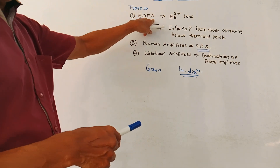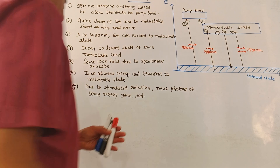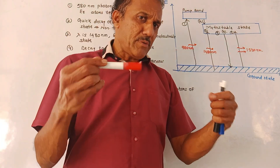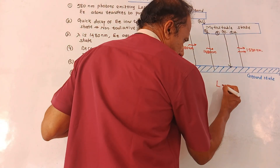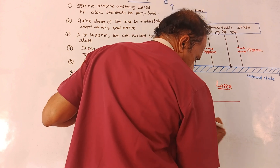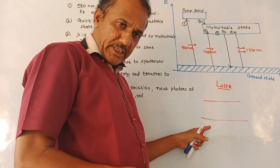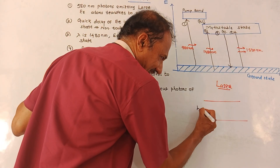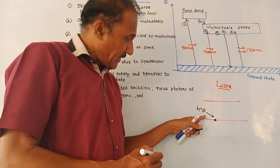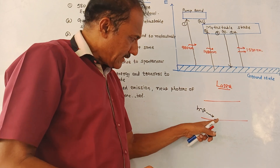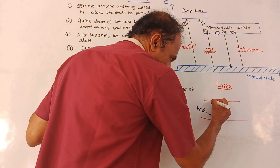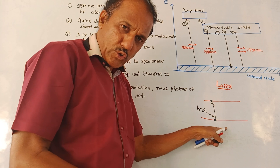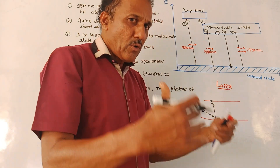Now let us discuss EDFA, the erbium doped fiber amplifier, in detail. Let us first brush up on what we studied about laser operation. We consider two energy levels: the lower ground state and the excited higher energy level. Atoms at the ground state absorb external energy (hν, where h is Planck's constant and ν is frequency) and get excited to the higher energy level. After some time, they fall back to the ground state and give out energy, generating a photon. This is called spontaneous emission.